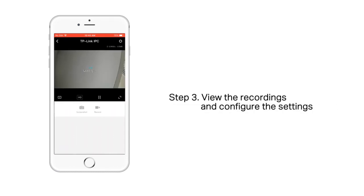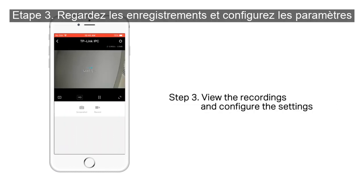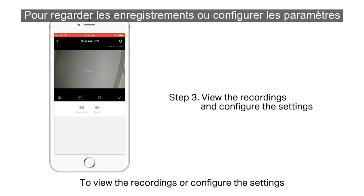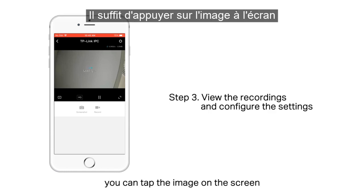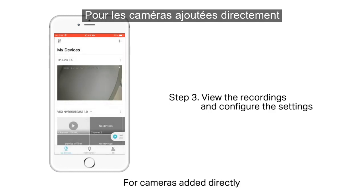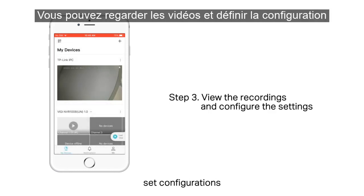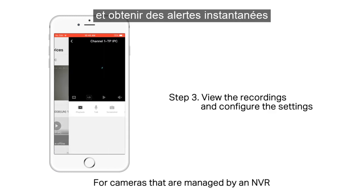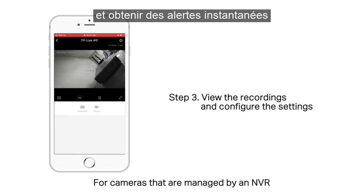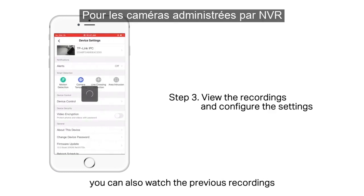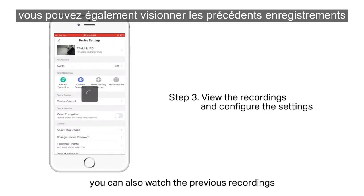Step 3: View the recordings and configure the settings. To view the recordings or configure the settings, you can tap the image on the screen. For cameras added directly, you can view the videos, set configurations, and get instant alerts. For cameras that are managed by an NVR, you can also watch the previous recordings.